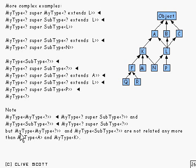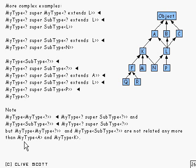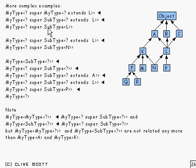Never let yourself be confused: MyType of MyType of something and MyType of SubType of something are never ever going to be related, any more than MyType A and MyType K are related. You might think they were related because K is a subtype of A, but they're not, because normal rules for generics mean they're never going to be related. So it's all a matter of just applying the rules for subtyping. Remember: if you've got something which is super some particular type, the contravariant rules apply. If it were extends, the covariant rules would apply. Thank you.